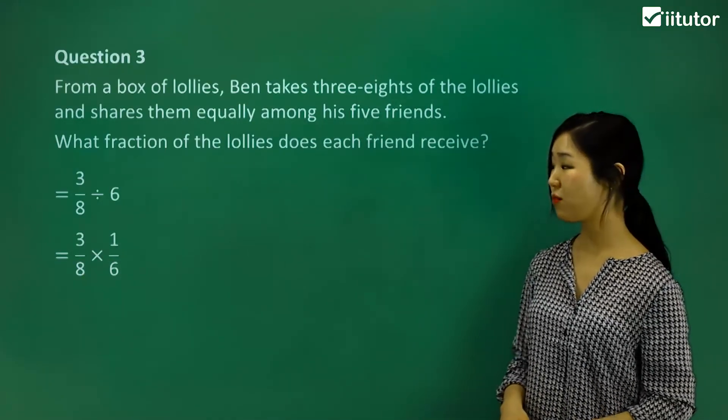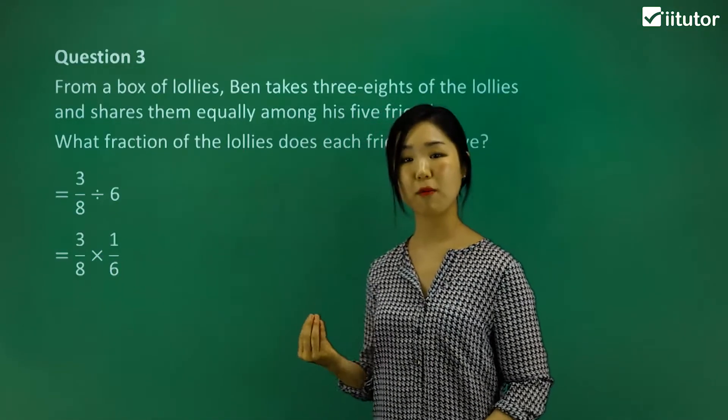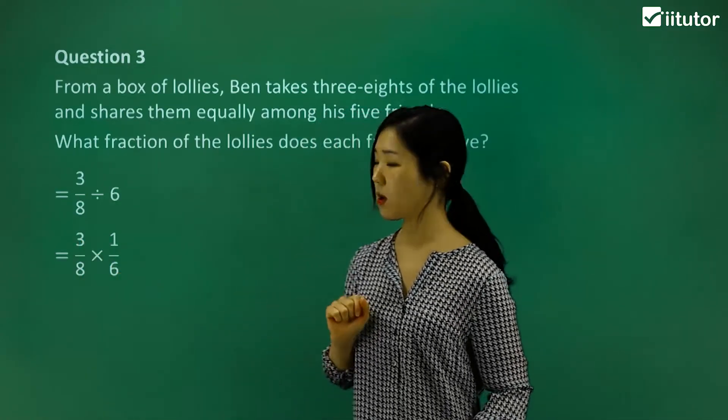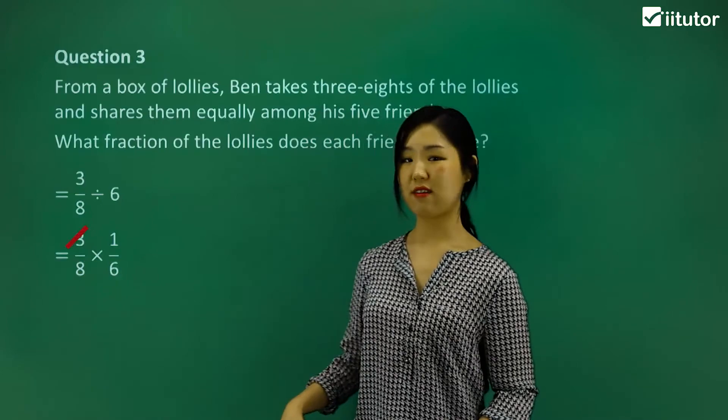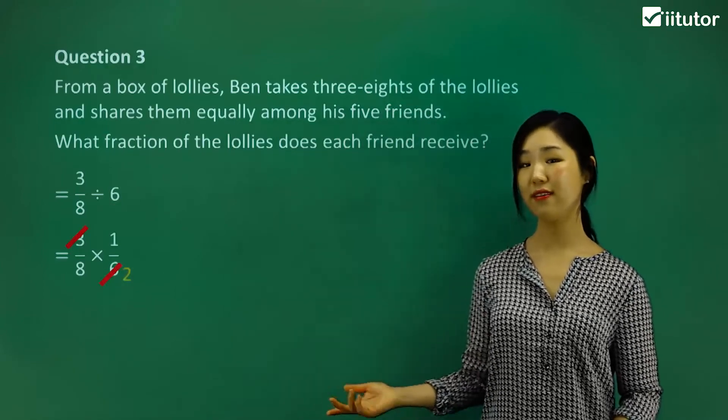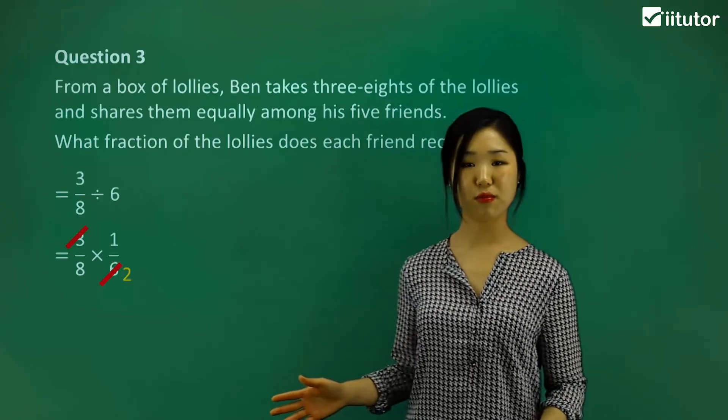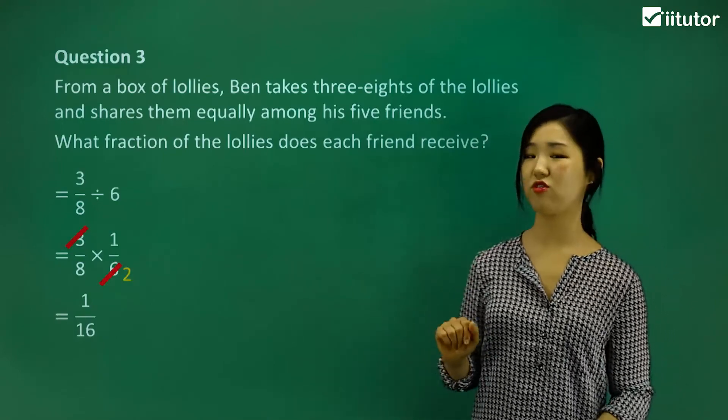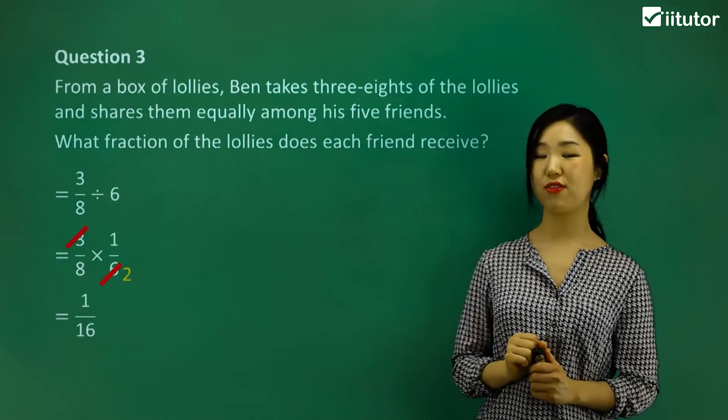Now we can go further and simplify. We can simplify anything on the numerator with anything on the denominator if they have common factors. Three and six both are divisible by three. Let's cancel the three - that's just gone because three divided by three is one. Let's cancel the six, and six divided by three is two. Now we can't go any further, so we'll do the multiplication. On the numerator, it's just one. The denominator, two times eight is 16. So each person gets one out of 16 proportion of these lollies.